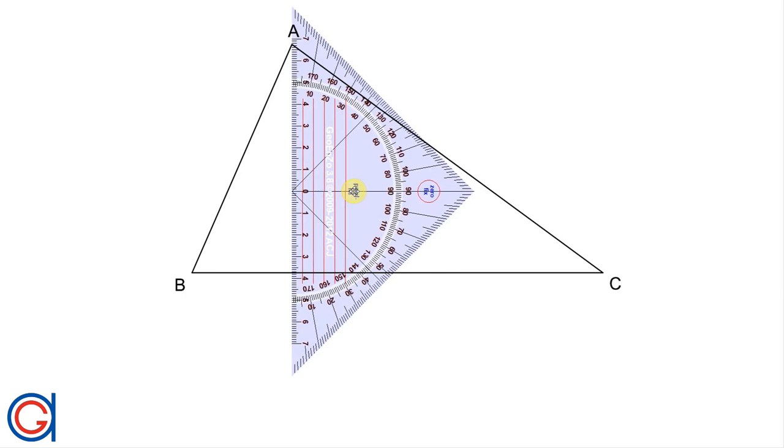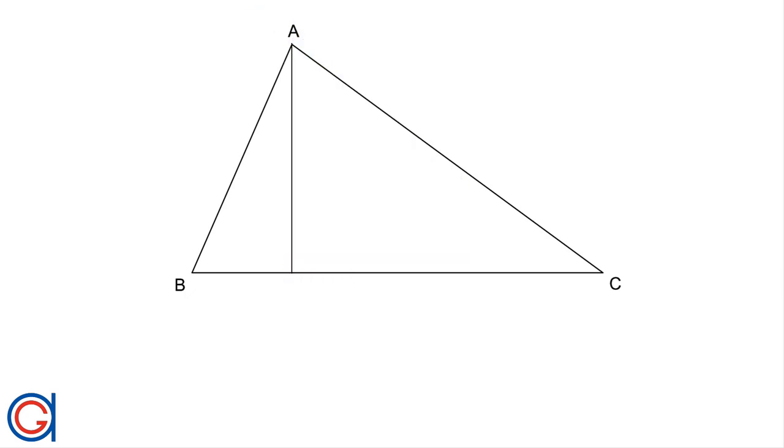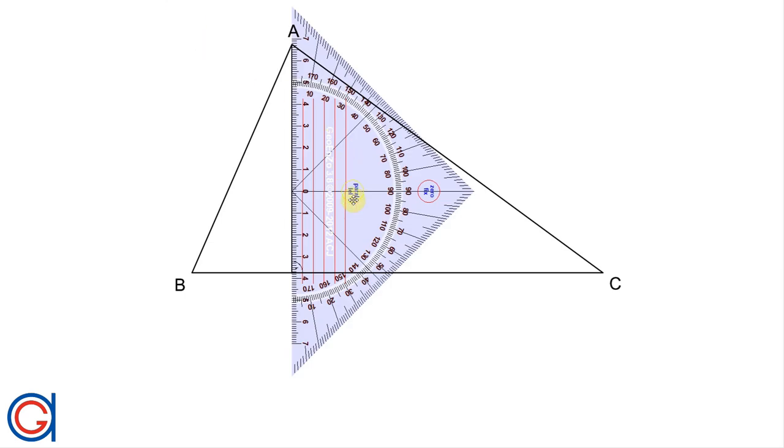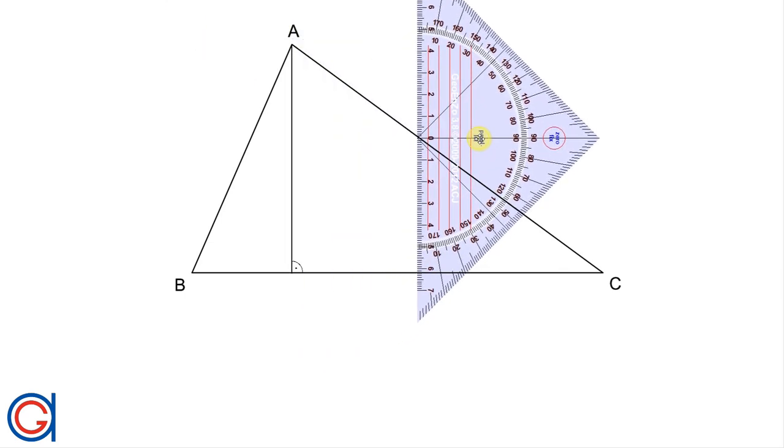From vertex A we draw a line at 90 degrees to the base of the triangle BC, and we will mark it with our 90 degree symbol as shown here.